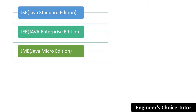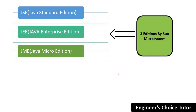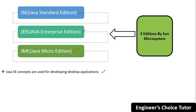The three editions are Java SE, Java EE, and Java ME. Java SE concepts are used for developing desktop and window-based applications. Java EE concepts are used for developing internet and enterprise applications.